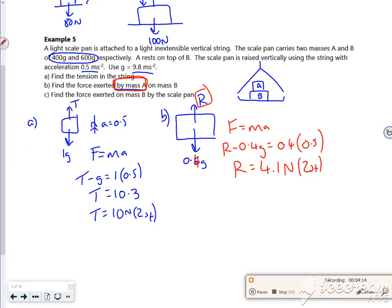Right, C says, find the force exerted on mass B by the scale pan. So if you imagine, B's pushing down, but the pan is pushing back. But B's pushing down with A pushing down on top of it as well. So what I can do is I can look at B.